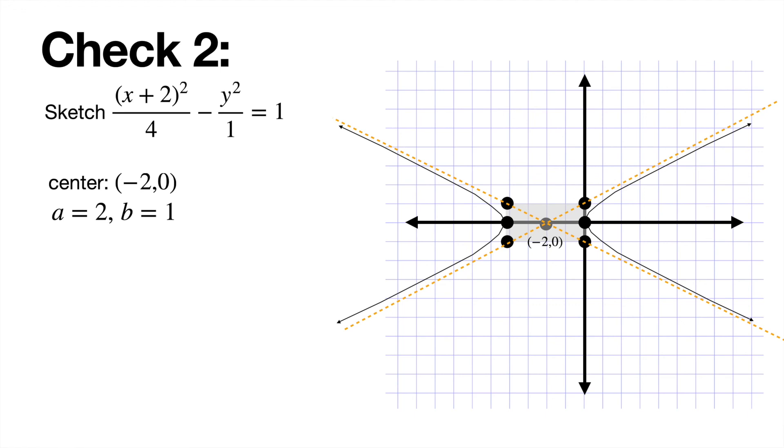And then once you have the asymptotes drawn, you can draw the branches. And once again, this is not very precise because of the width. We don't know how wide the branch is, but this certainly gives us the basic idea of what the hyperbola looks like.